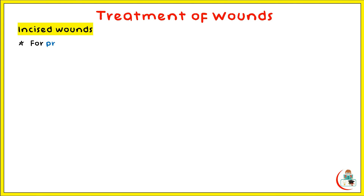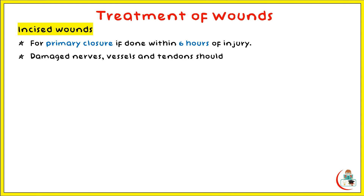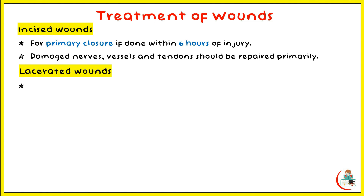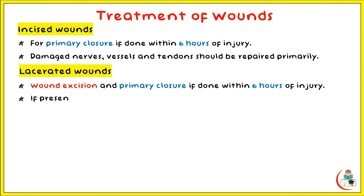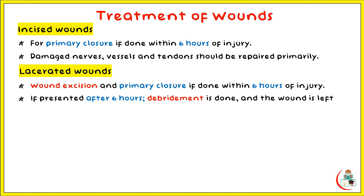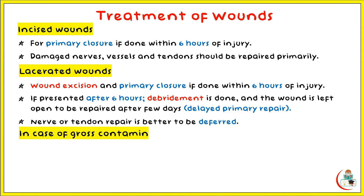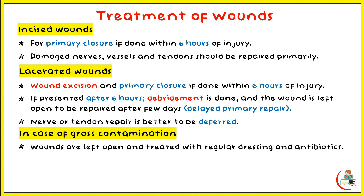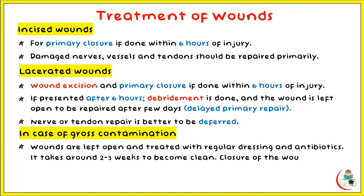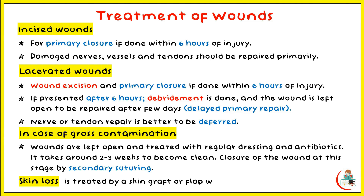Incised wounds are suitable for primary closure if done within six hours of injury. If presented later, debridement is done and the wound is left open to be repaired after a few days by delayed primary closure. Nerve or tendon repair is better performed at this stage. In cases of gross contamination, wounds are left open and treated with regular dressing and antibiotics for two to three weeks until they become clear. Closure at this stage is by secondary suturing. Skin loss is treated by a skin graft or flap when the wound becomes clean.